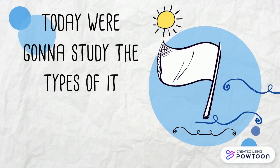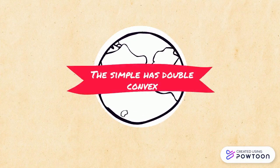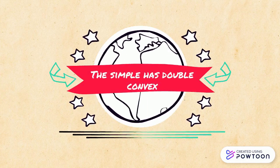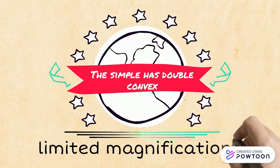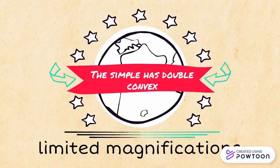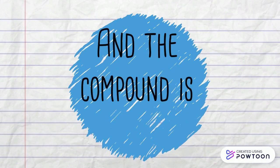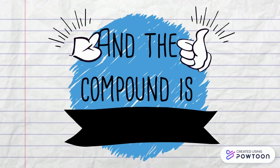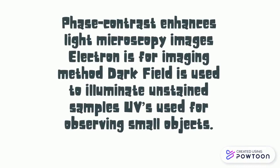Today we're going to study the types of microscopes, starting with the simple and compound types. The simple type has a single lens with limited magnification. The compound microscope uses objective and ocular lenses, raising contrast and enhancing the slide.